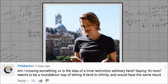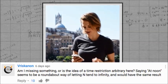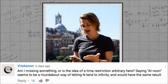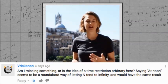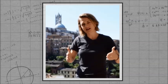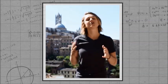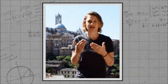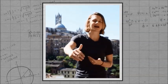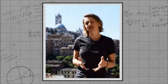I liked Vrishkanen's comment: 'Am I missing something here, or is the idea of a time restriction arbitrary? Saying at noon seems like a roundabout way of letting n tend to infinity, and would have the same result.' That's a good question. We needed everything to happen in a finite amount of time in order for there to be an end — we were asking how many balls were in the urn at the end. So it was like letting n tend toward infinity, but we couldn't let time tend to infinity, because you can't really ask about what the urn is like at infinity.